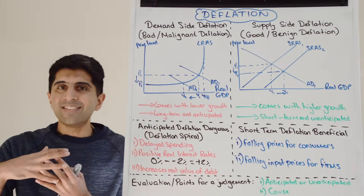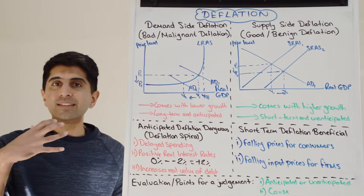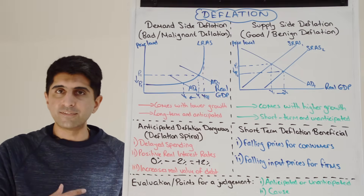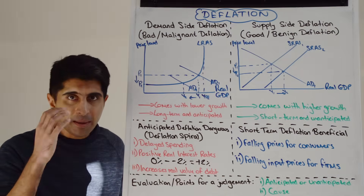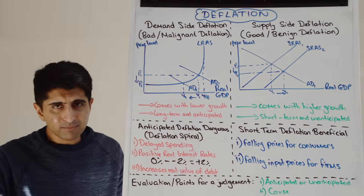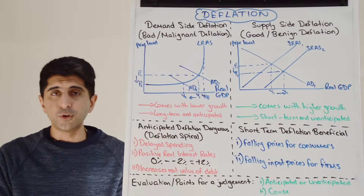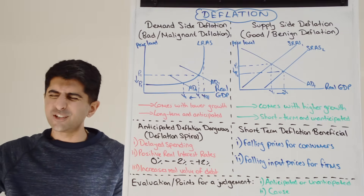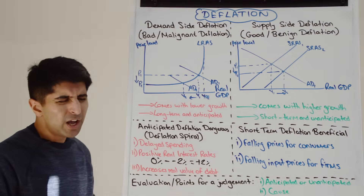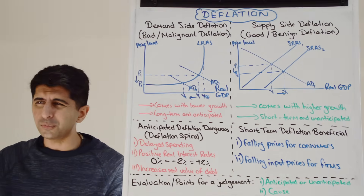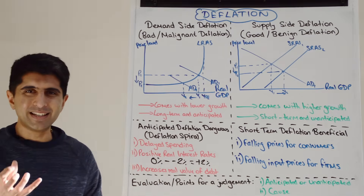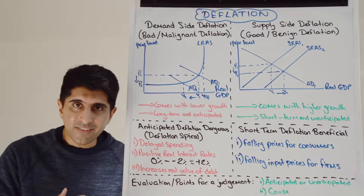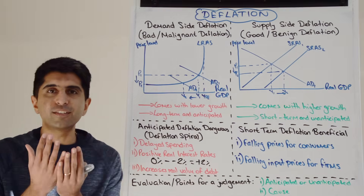If real interest rates are always positive, the incentive is to save instead of to borrow and consume, or instead of to borrow and invest. Saving makes more rational sense for businesses and households alike. But if there's more saving and less borrowing for consumption and investment, AD reduces even further — we get more deflation, lower growth, and higher unemployment. Deadly consequences.